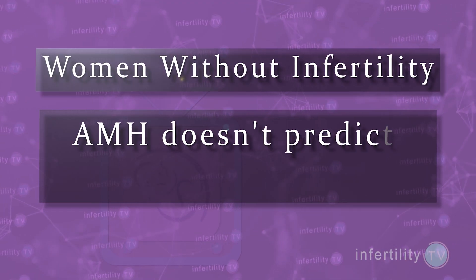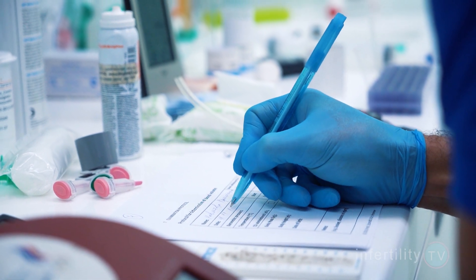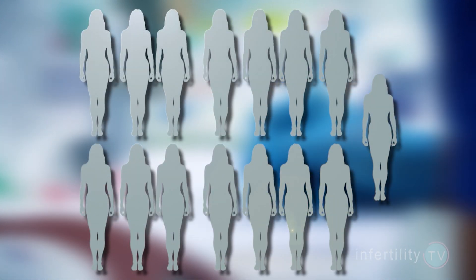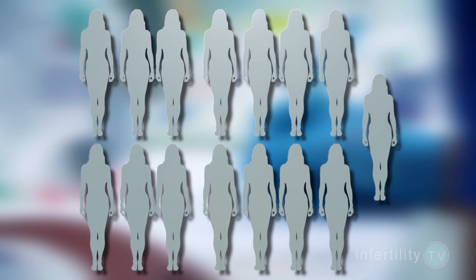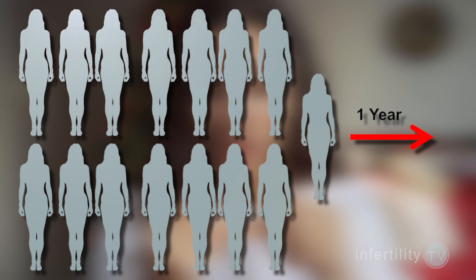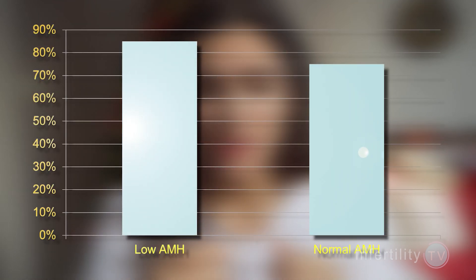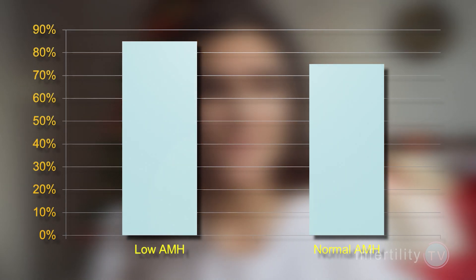For women who have never had trouble getting pregnant, AMH doesn't predict ability to get pregnant. In 2017, researchers in North Carolina started following 750 women without a history of infertility who had just started trying to conceive. After one year, they compared the AMH levels in women who became pregnant and those who didn't. They found that women with low AMH levels became pregnant just as often as women with normal AMH levels. In other words, AMH did not predict fertility problems in this group.